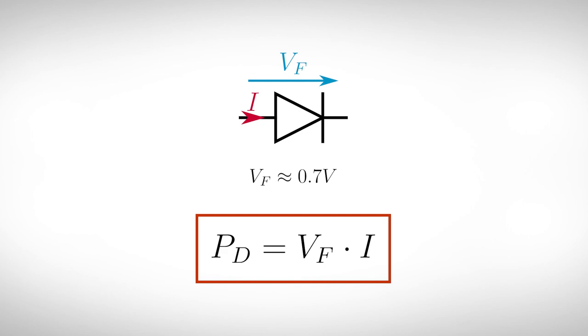Now we want to choose the right diode for our application. One problem is the voltage drop of a normal silicon diode of approximately 0.7V in forward direction. Multiplied with the current, this results in a power loss in the diode that lowers the efficiency of our power supply.